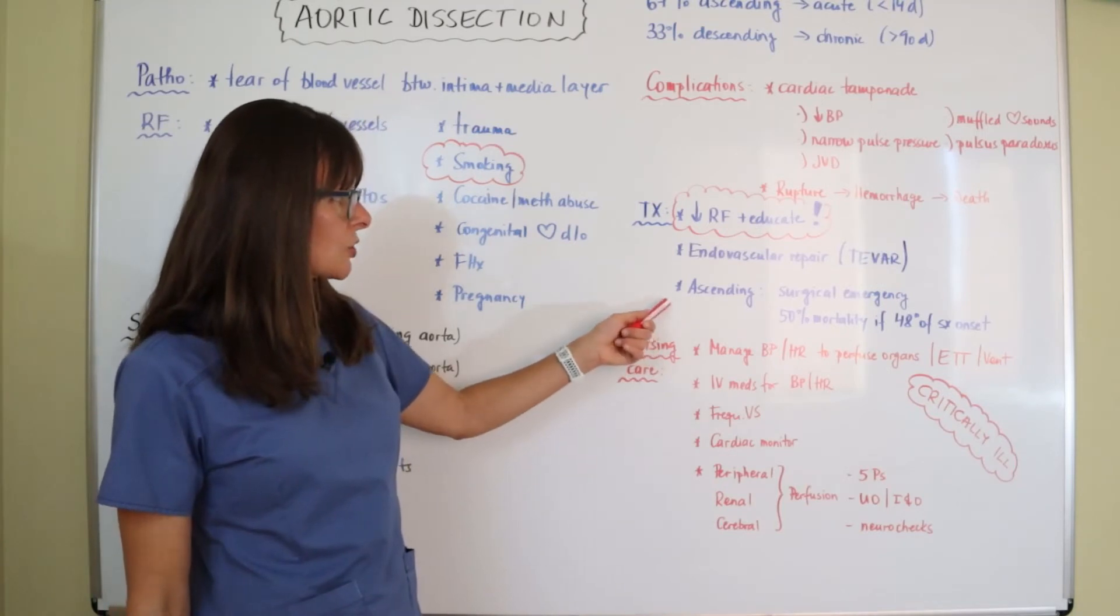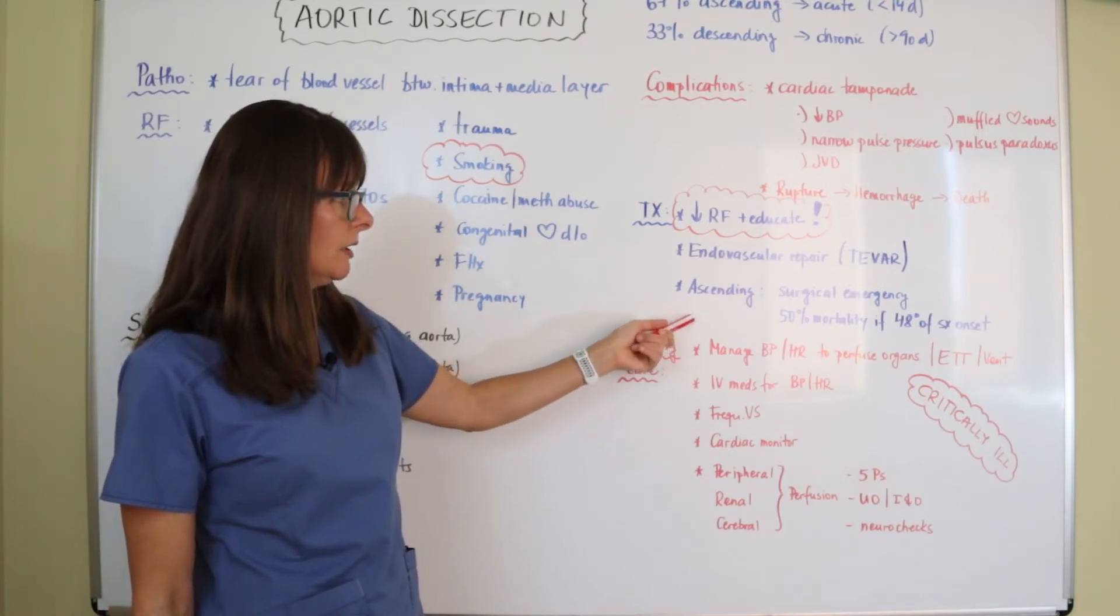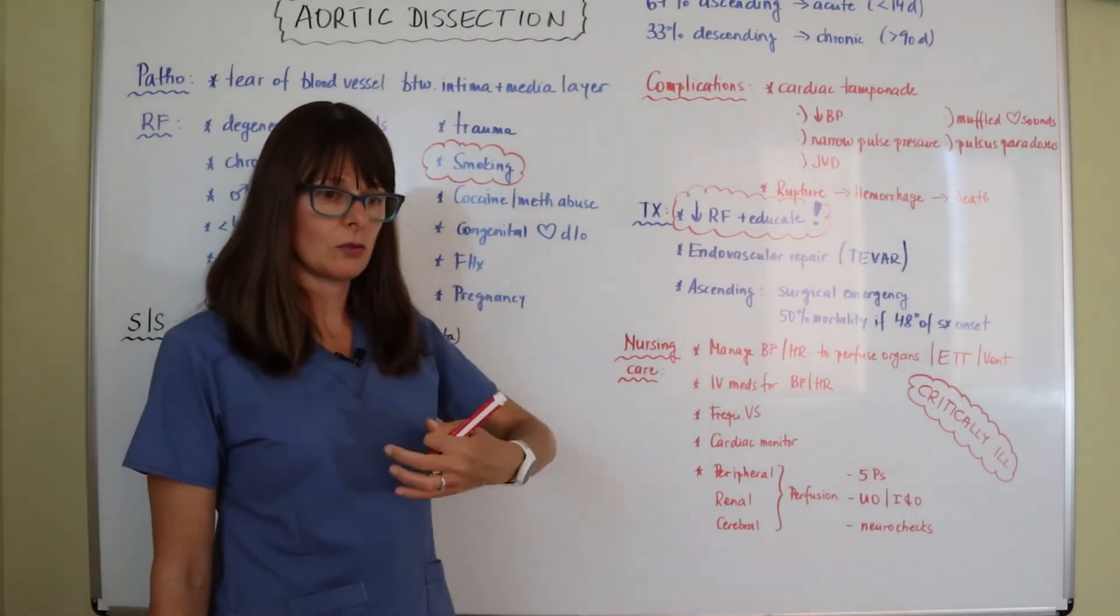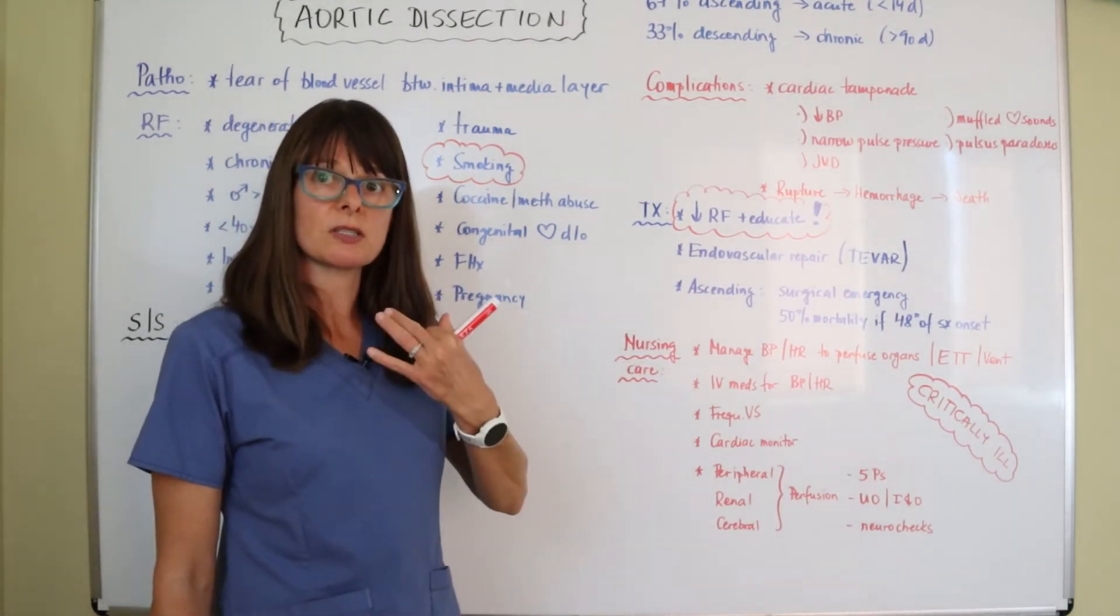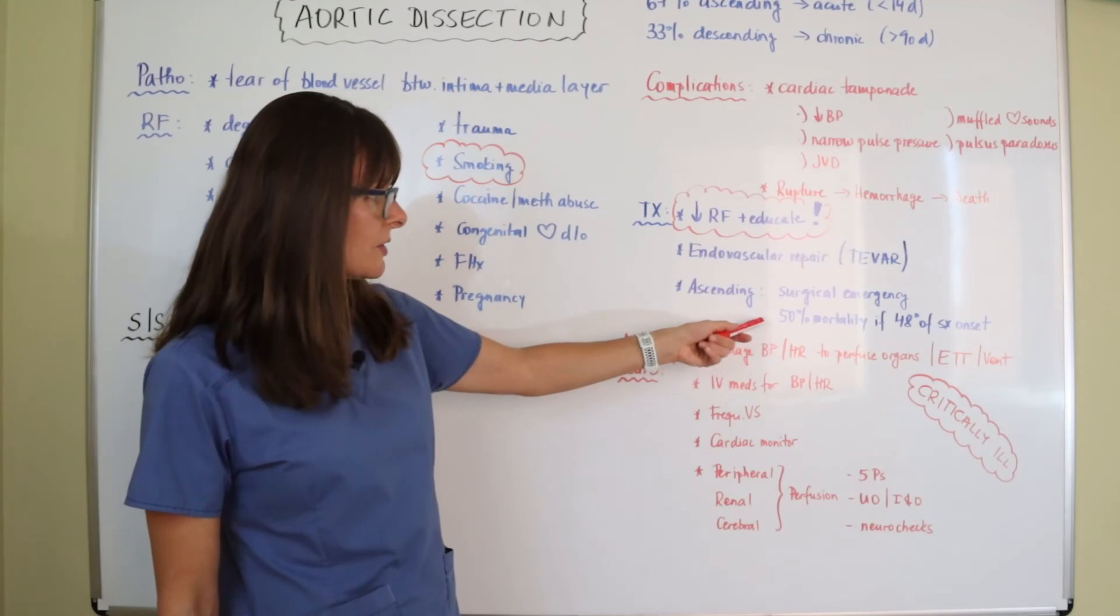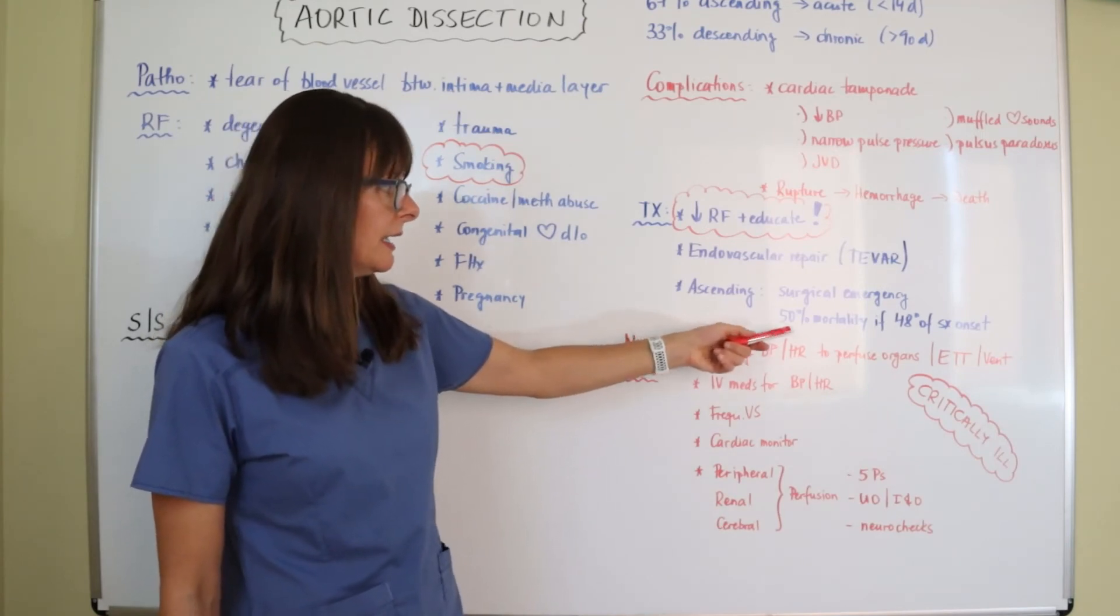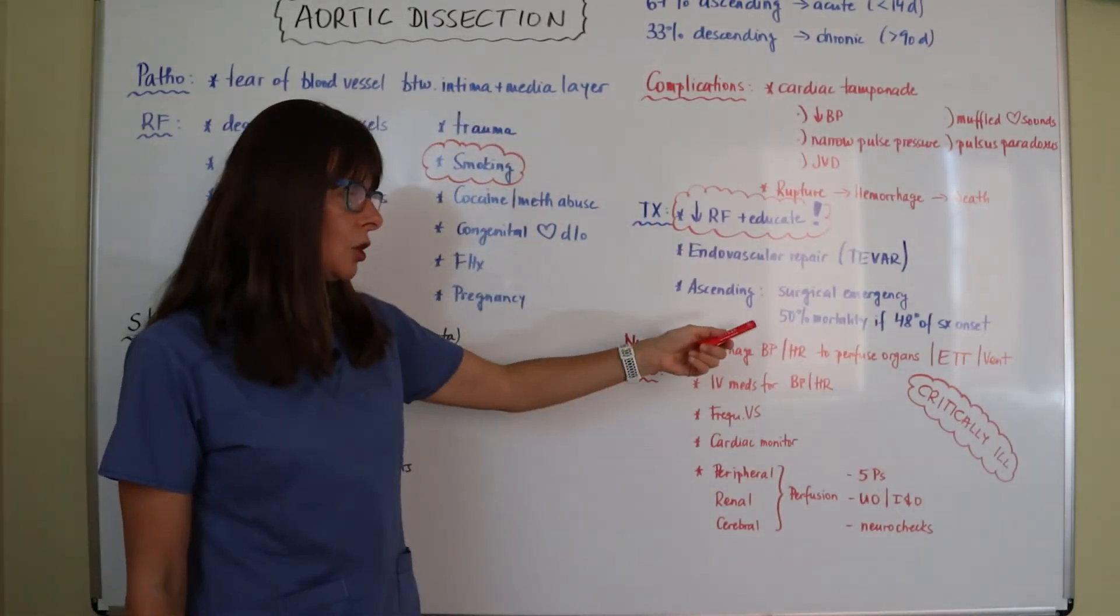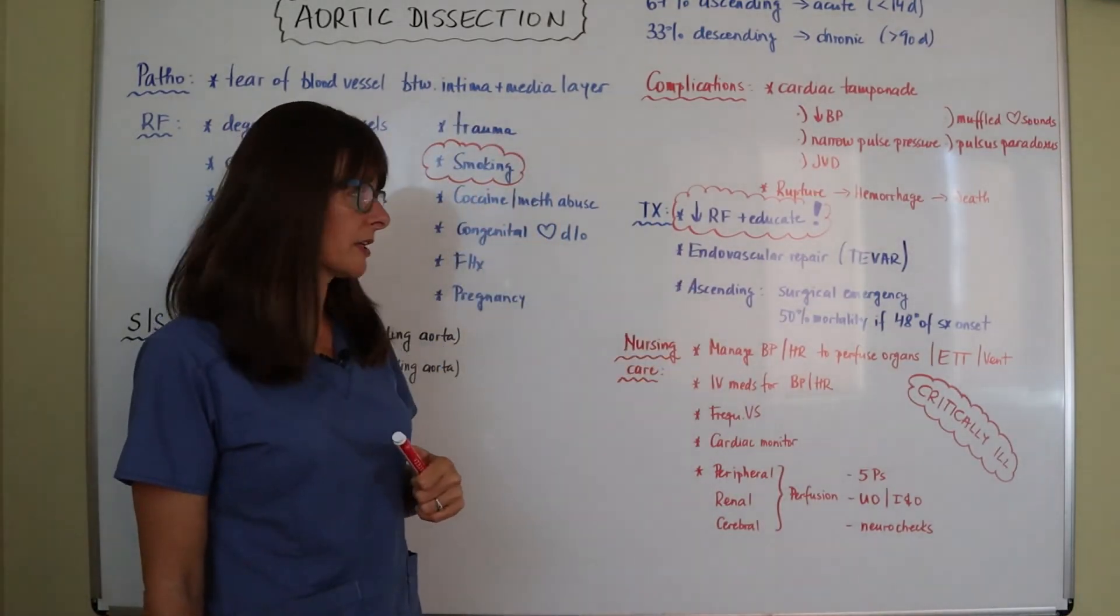If the dissection is in the ascending aorta, this is definitely a surgical emergency because it is the location where the blood just leaves the heart. And there is a 50% mortality if the patient comes to the hospital within 48 hours of symptom onset. So again, very, very serious here.